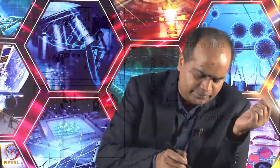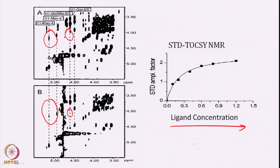STD is a simple module that can be added to a 2D experiment. You can add STD to TOCSY - recording one STD-TOCSY without saturation and one with saturation, then identify which peaks disappear. In 2D you can find out additional atom-level information in a more resolved way about which atoms are involved in binding. Similarly, by increasing ligand concentration and recording several STD-TOCSY experiments, you can determine the KD of the protein-ligand interaction and perform group epitope mapping by fitting the curve.